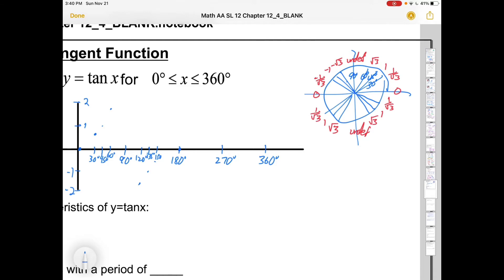What happens at those undefined values is that you get vertical asymptotes. So the actual function looks like this. And it's going to do the same sort of thing over here to 0. And at 270 you'll have another vertical asymptote.